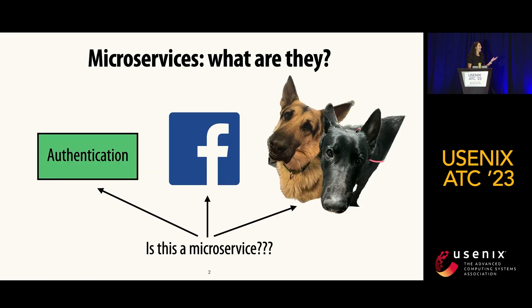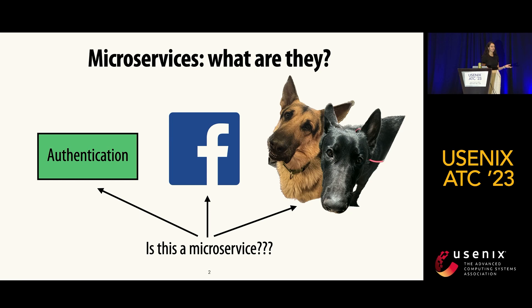But what are they? My two cute dogs are definitely not microservices, and Facebook is likely not a single microservice but a collection of microservices. But is this authentication block a microservice?